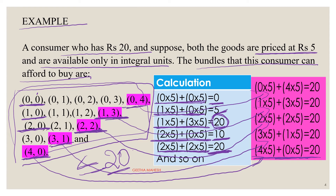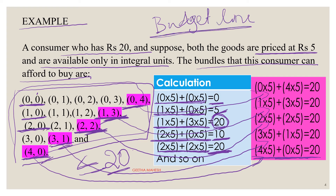Graphically, when you represent these combinations, you get a budget line. The budget line is a graphical representation of all those combinations of two goods whose cost is exactly equal to the consumer's income.